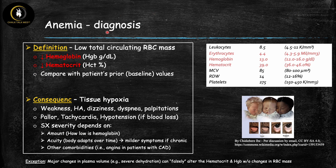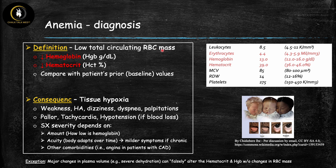Now let's define anemia. It's a total circulating red blood cell mass being lower than a reference range. The way we diagnose it is we get a CBC, and the three parameters that have to do with red blood cells are the erythrocytes, which is the total red blood cell count; the hemoglobin concentration; and the hematocrit, which is the ratio or percentage of the volume of red blood cells over the total volume of blood. The two that we care most about are hemoglobin and hematocrit, because the hemoglobin is really the important functional part.